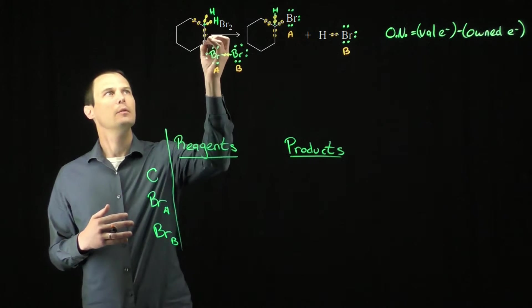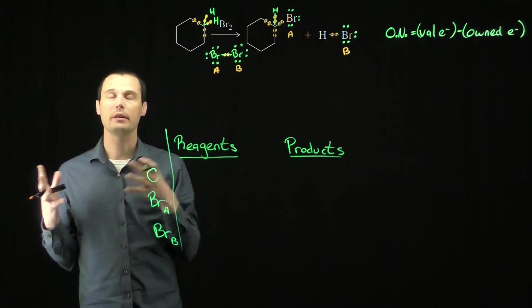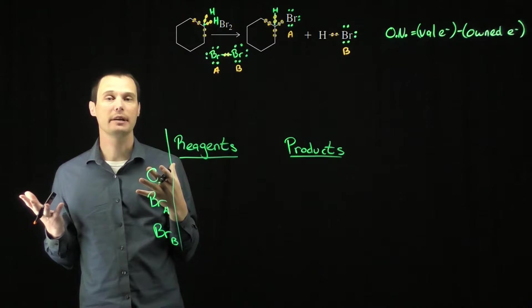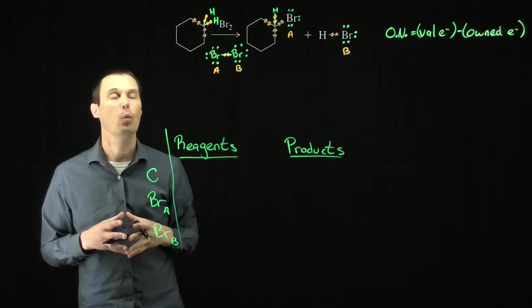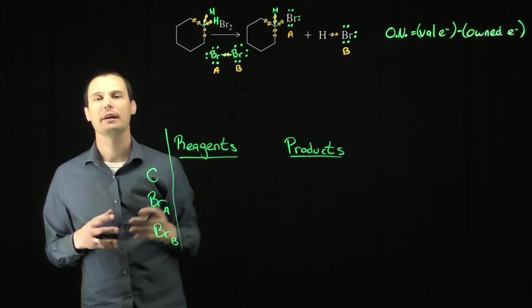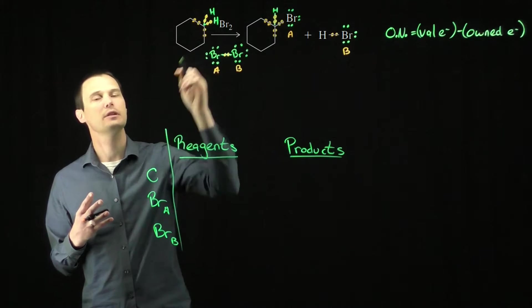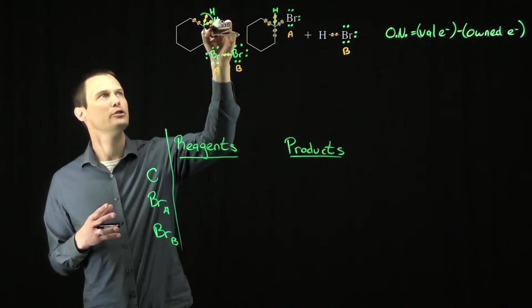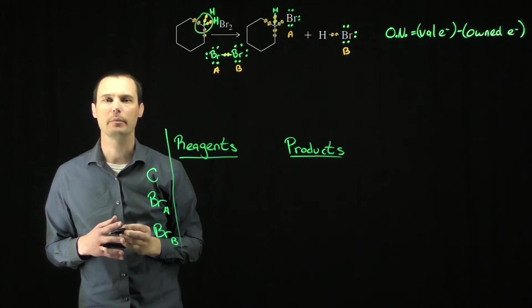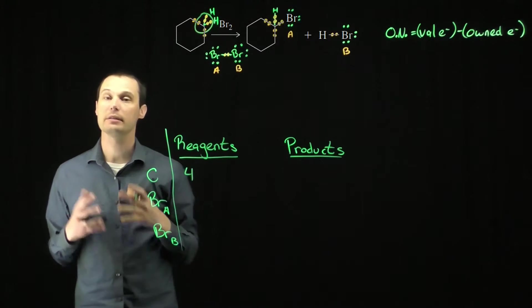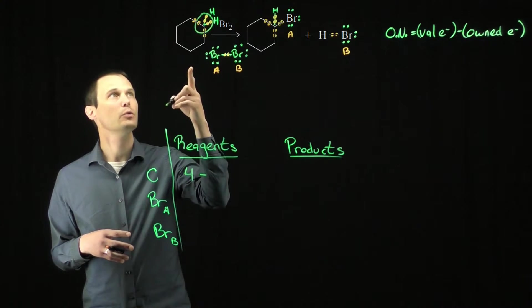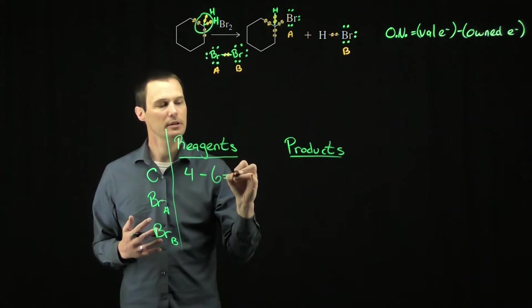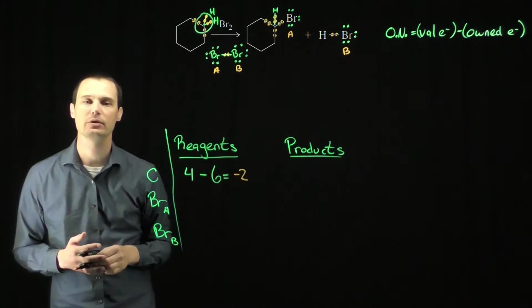Let's start with carbon. How many electrons carbon owns depends on the electronegativity of the atom it's bonded to. When carbon is bonded with carbon, those two have the same electronegativity, so the two electrons in that bond are shared one electron per atom. Carbon is more electronegative than hydrogen, so it owns both electrons in a carbon-hydrogen bond. This carbon owns both electrons in the carbon-hydrogen bonds and one electron in each of the carbon-carbon bonds. Carbon wants four electrons in its neutral ground state, and it owns six electrons in this molecule. So the oxidation number for this carbon in the reagents is minus two.